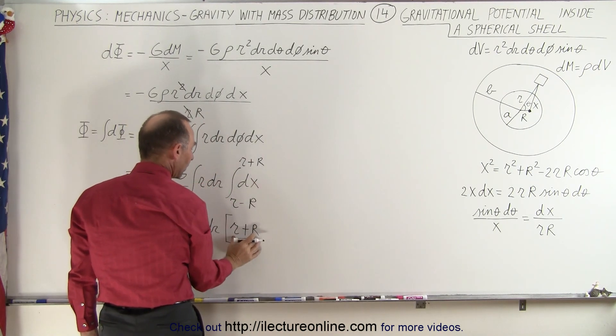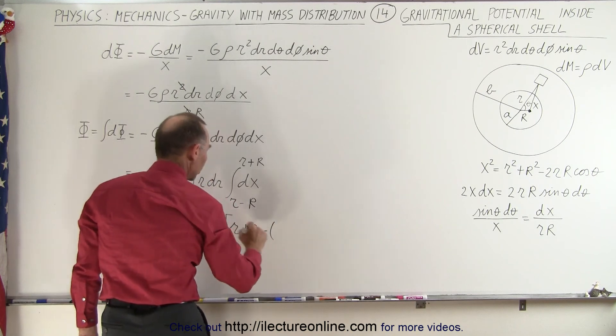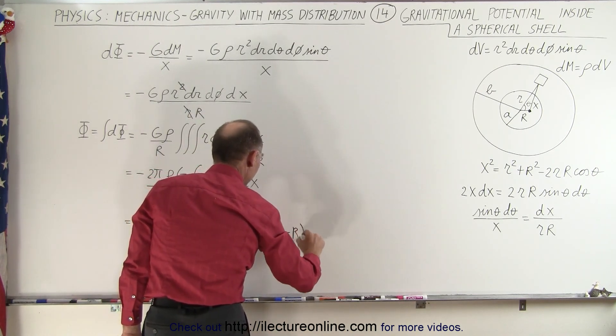because when we integrate dx, we get x. We plug in the upper limit, we get r plus R, minus when we plug in the lower limit, we get r minus R.